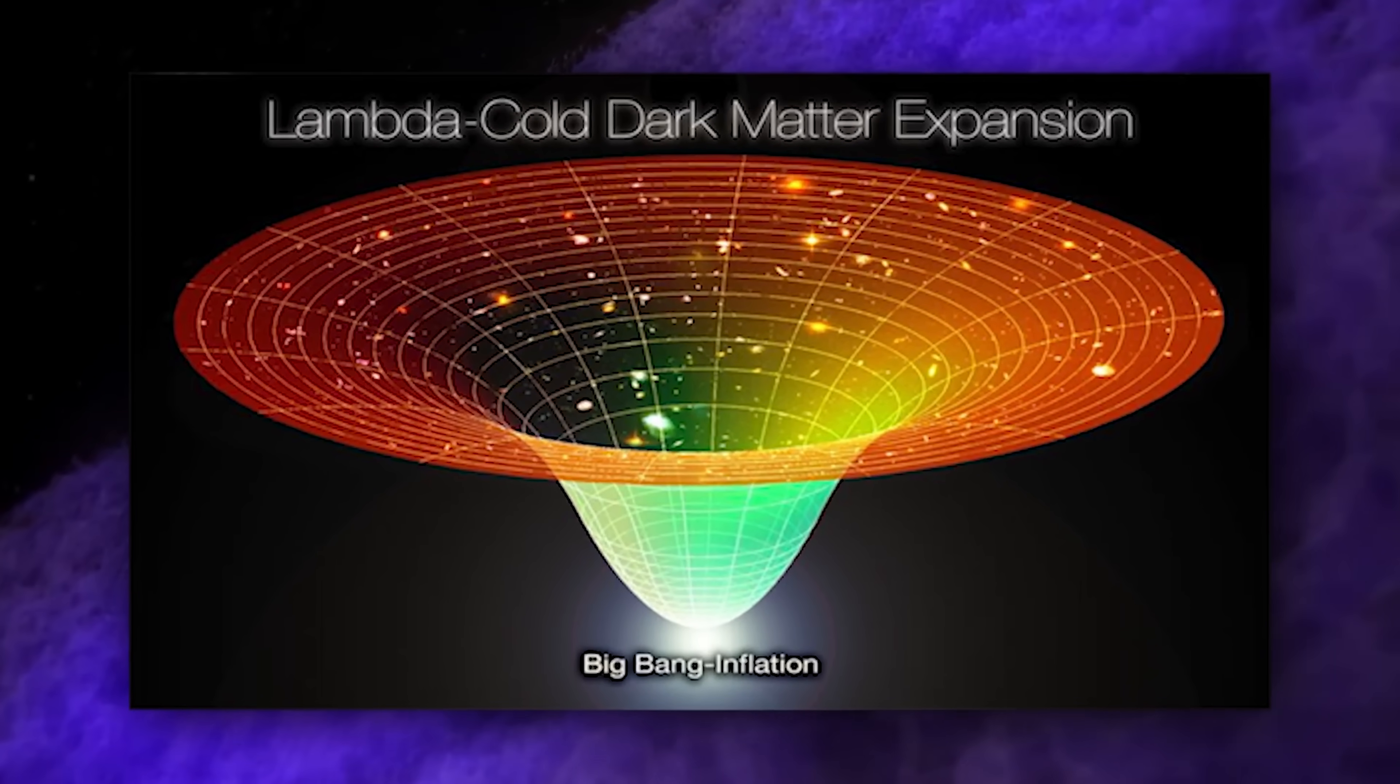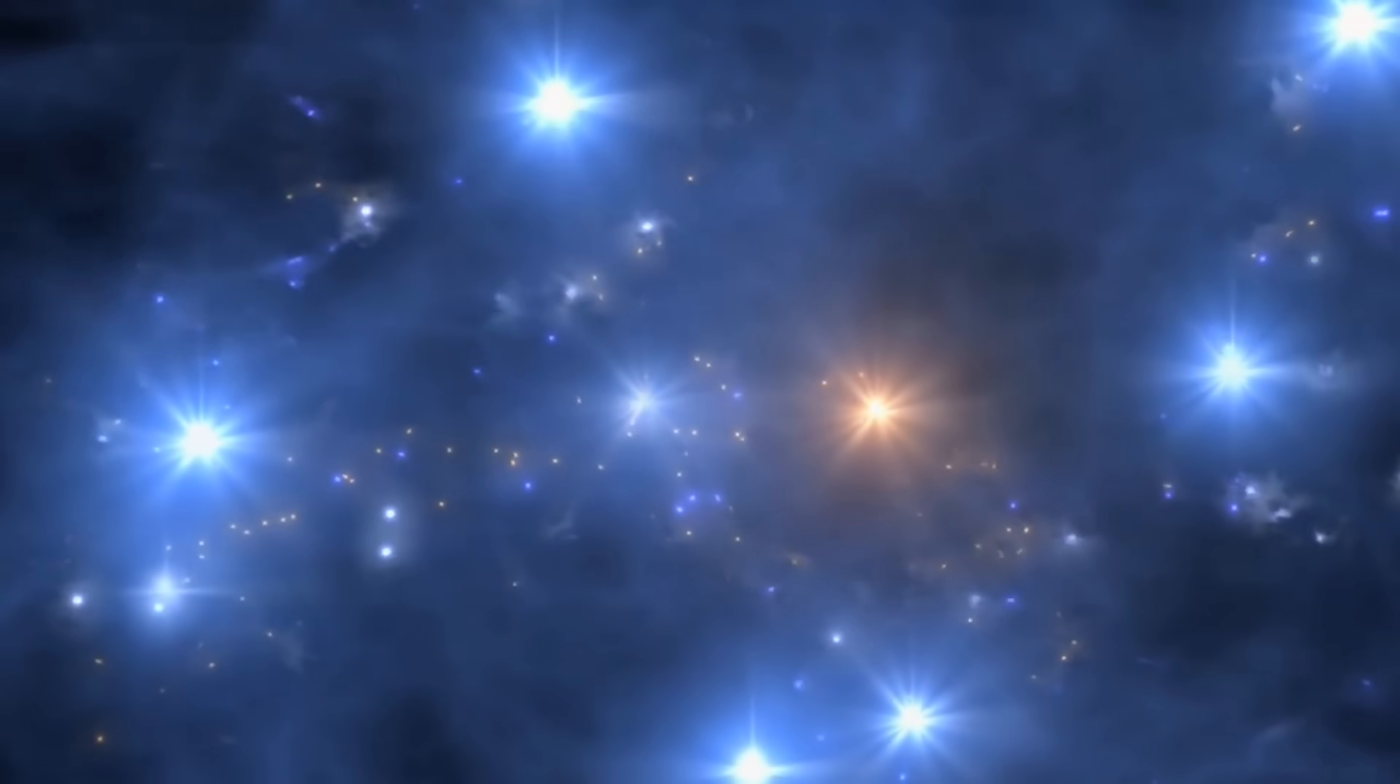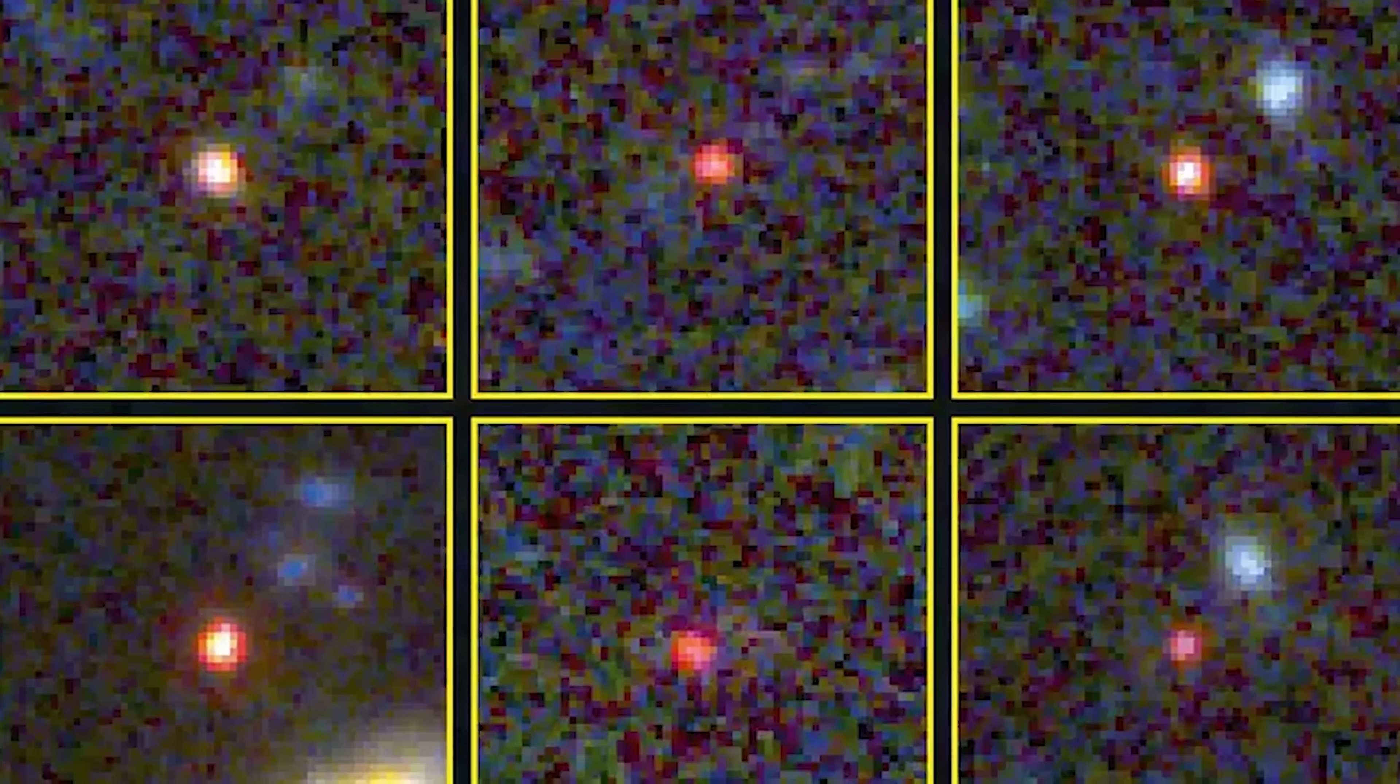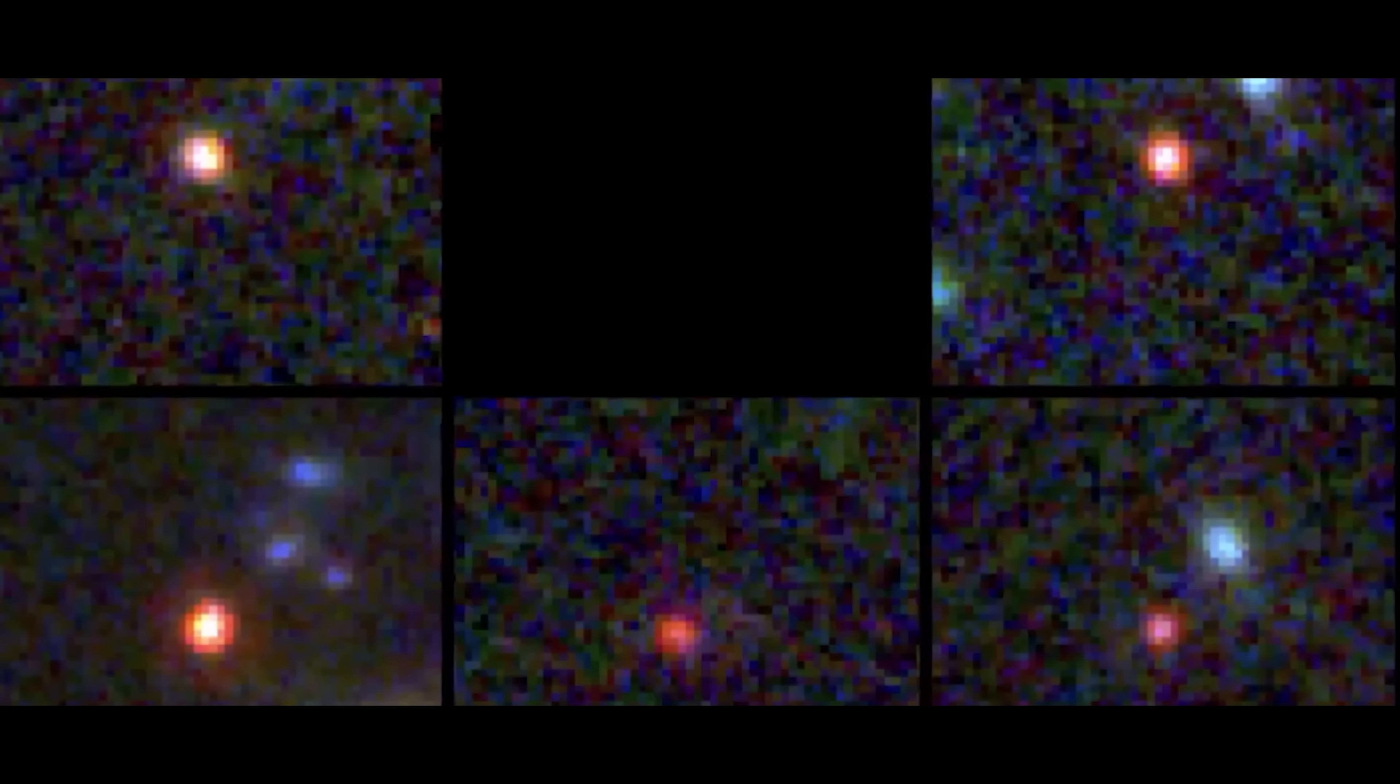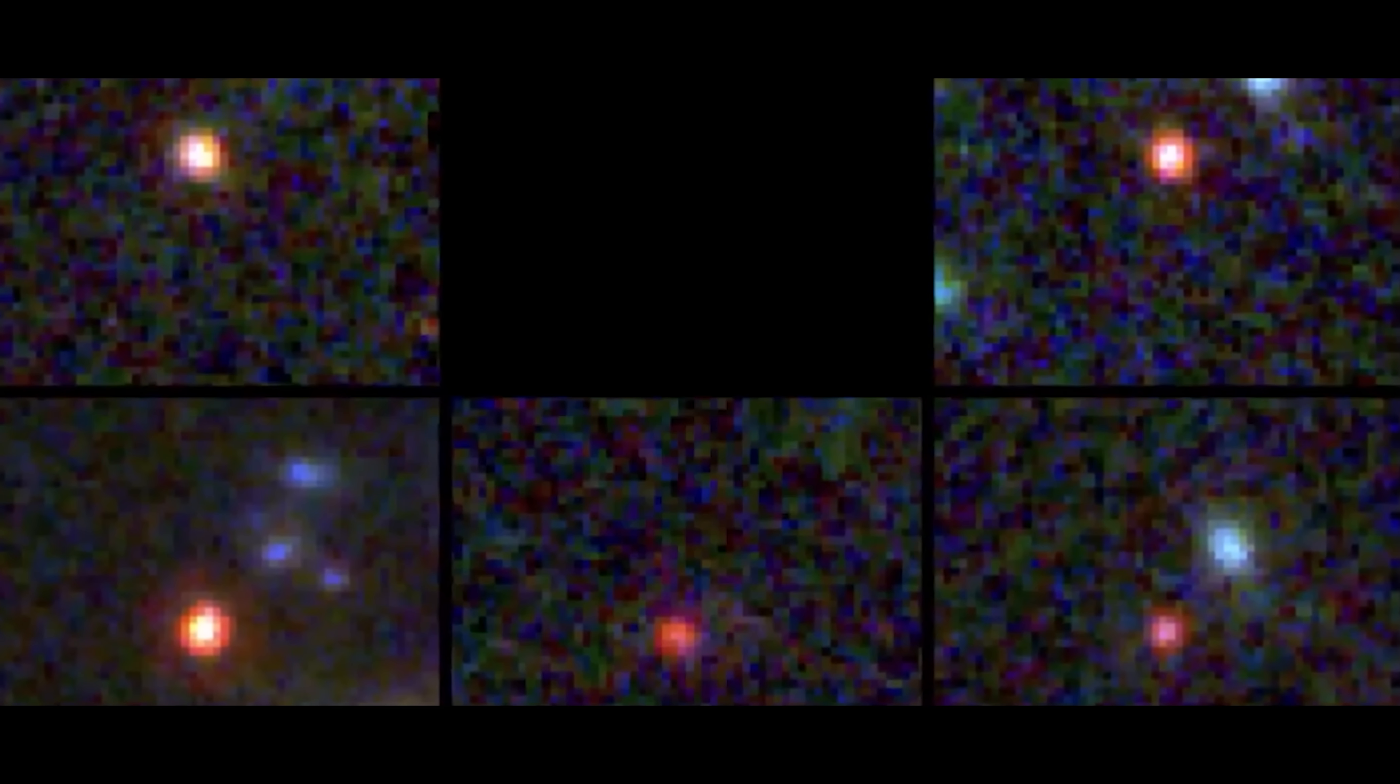According to the Lambda Cold Dark Matter model, which has been the standard framework in cosmology for explaining the universe's composition and evolution, some of these newly discovered objects seem excessively massive. This is a huge discovery. And that's the most exciting piece of this telescope, of this remarkable instrument we've put in space, is finding things that we didn't expect, that we can't explain.